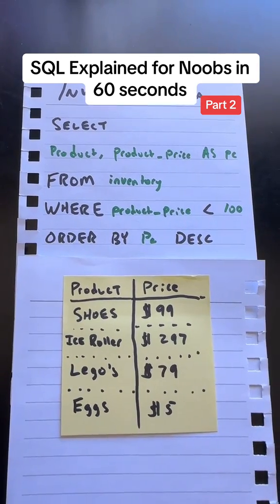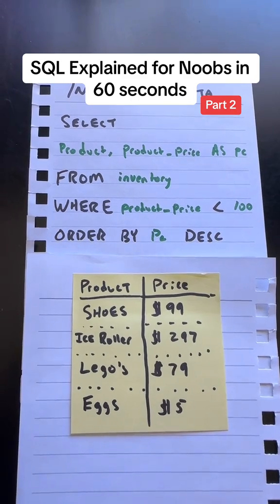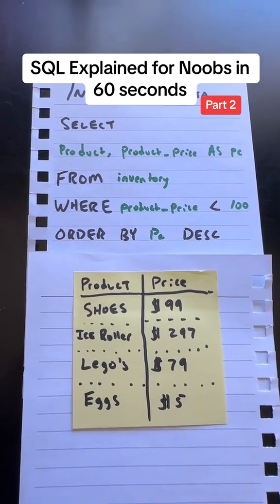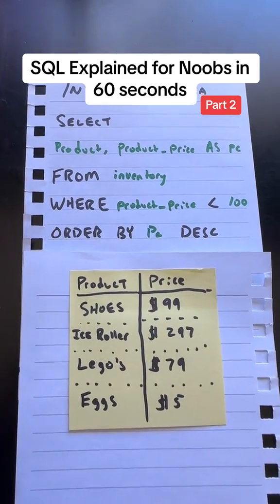Now, to organize this table a little bit more, I used an order by clause, which allows you to order by the PC, which is the product price column in descending order, which means that the most expensive product will be at the top.